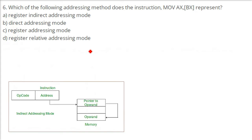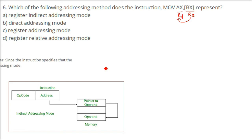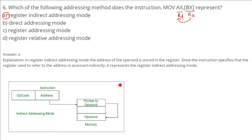Which addressing method does the instruction MOVE A, B represent? There are different kinds of addressing modes — addressing mode refers to where the data will be available: right there, in a register, or in memory. The answer is register indirect addressing mode. In this mode, the address of the operand — from which the opcode will operate — is stored in the register, and since the instruction specifies the register indirectly, it represents register indirect addressing mode.